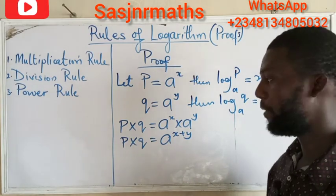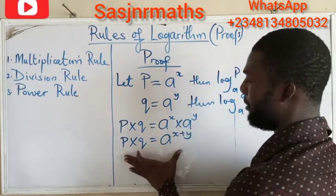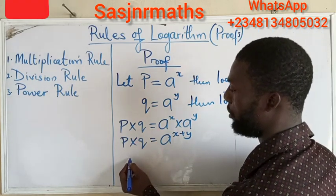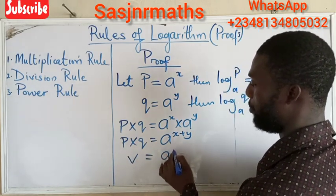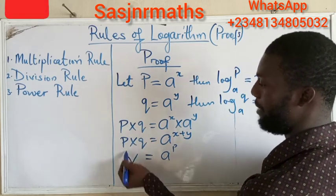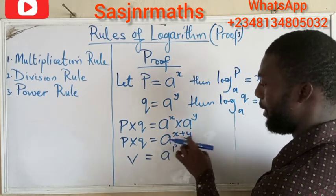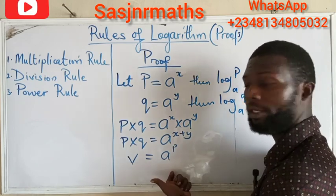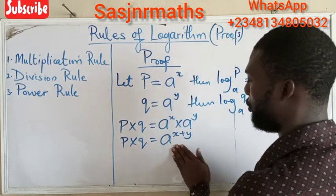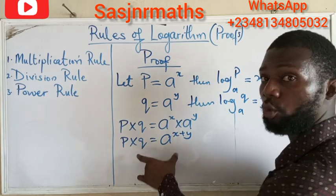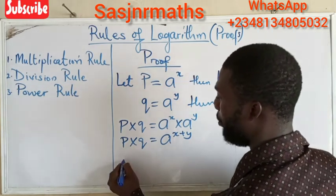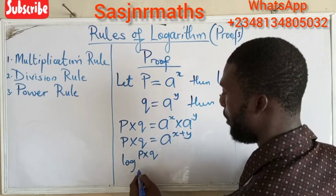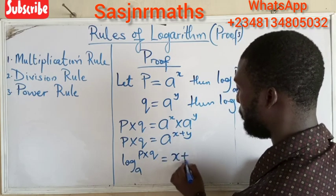Now that we have gotten to this stage, the next thing is to switch from this indices structure to logarithmic form. This structure — p times q equals a raised to power x plus y — is an indices structure. So switching to logarithmic form: the base a goes low, giving us log base a of (p times q) equals x plus y.